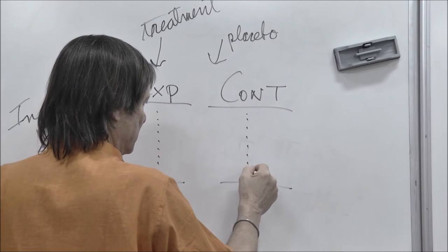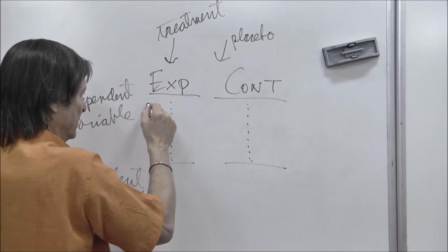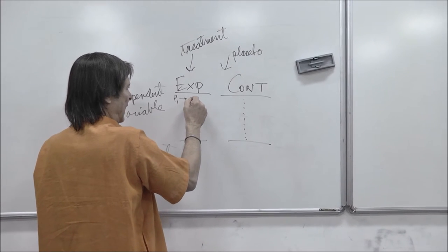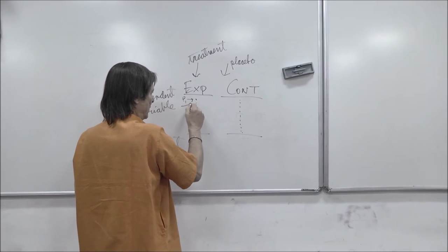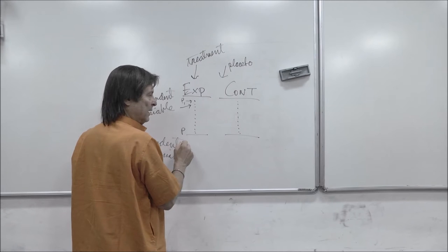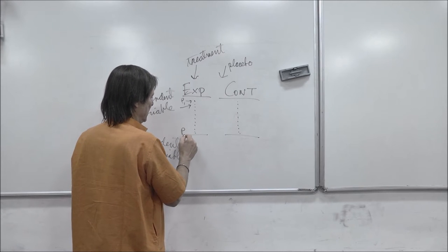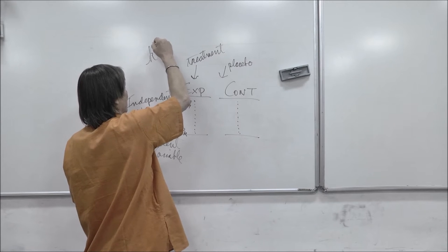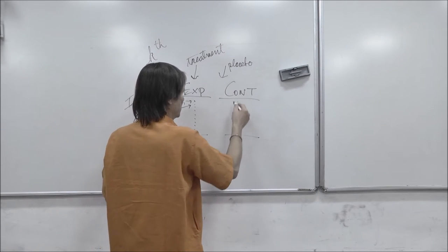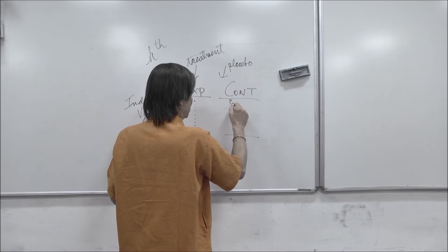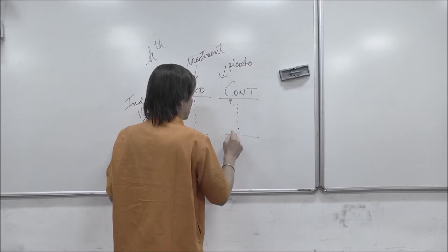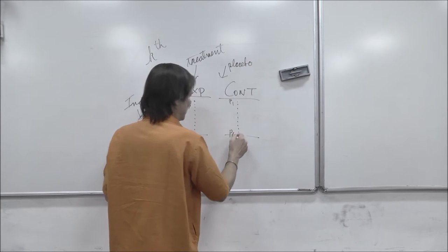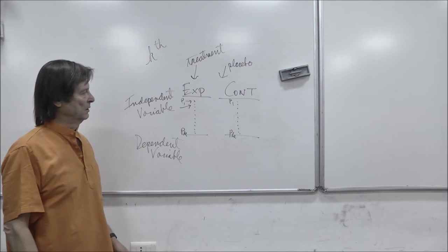Each group will have one subject, or participant. This will be participant one's outcome, participant two outcome, participant the last participant, which we could say the kth participant. Here's the next participant, the first participant in control group, and the kth participant here, the last participant in that group.